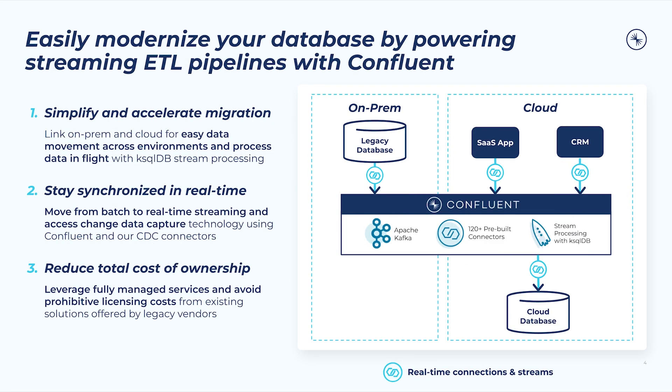Modernizing your database doesn't have to be this much of a headache. Real-time data streaming powered by Kafka makes it possible to move data reliably at scale while keeping data systems online during the migration through streaming ETL pipelines instead of batch-based processes. Confluent further simplifies and accelerates database modernization efforts with features like cluster linking to easily migrate data across different environments. Our rich ecosystem of 120+ pre-built source and sink connectors, including several battle-tested change data capture source connectors, makes it easy to connect multiple data systems and keep them in sync throughout the migration.